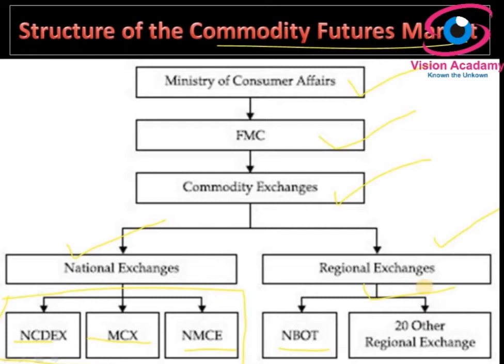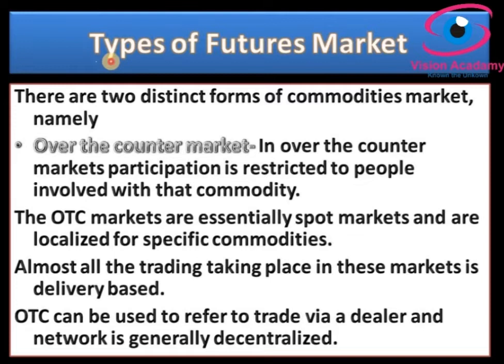Coming to regional exchanges, there are 20 other regional exchanges and the National Board of Trade plays a very significant role among them. So the highest authority in commodity regulation is the Ministry of Consumer Affairs, the regulator is the Forward Market Commission, and commodity exchanges are segregated into national and regional exchanges.